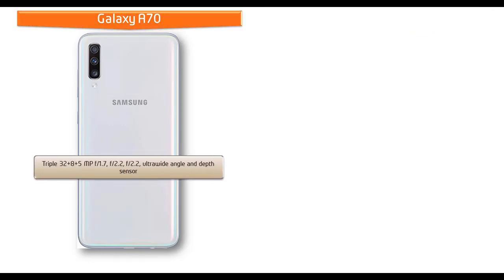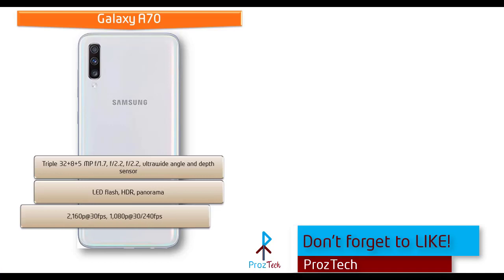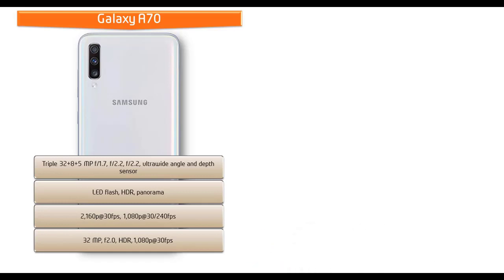About the camera, Samsung Galaxy A70 comes with a triple 32 + 8 + 5 megapixels primary camera setup with f/1.7, f/2.2, and f/2.2 apertures, featuring ultra-wide angle and depth sensor. It shoots full HD videos at 30 fps, HD videos at 30 or 240 fps, and is also equipped with a 32 megapixel front camera with f/2.0 aperture with HDR and 1080p recording at 30 fps.